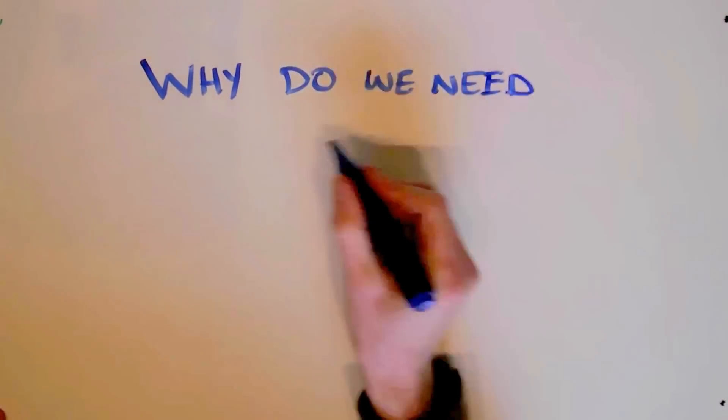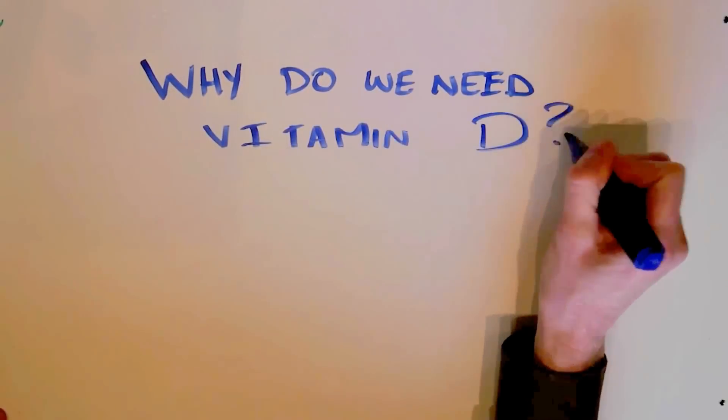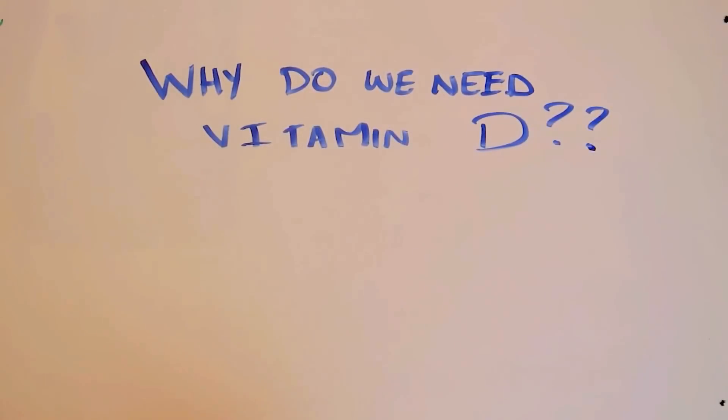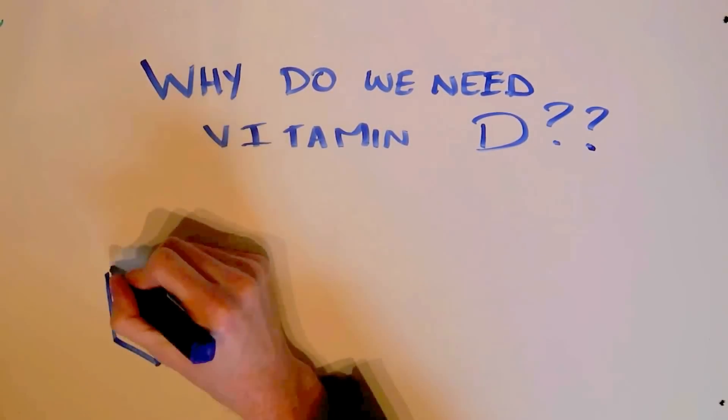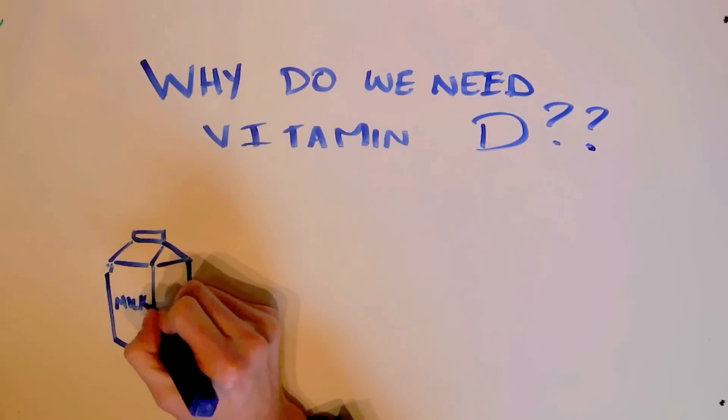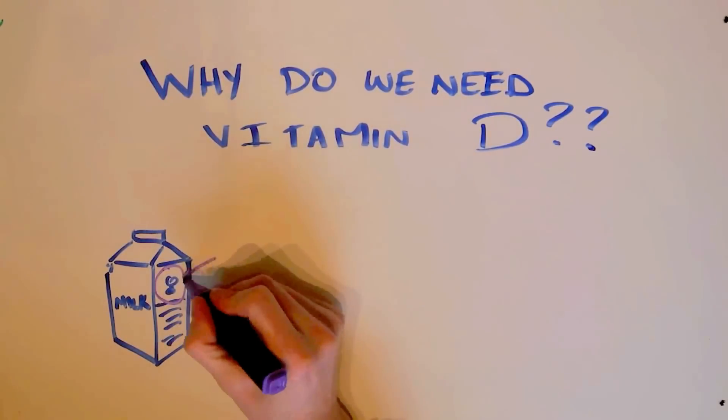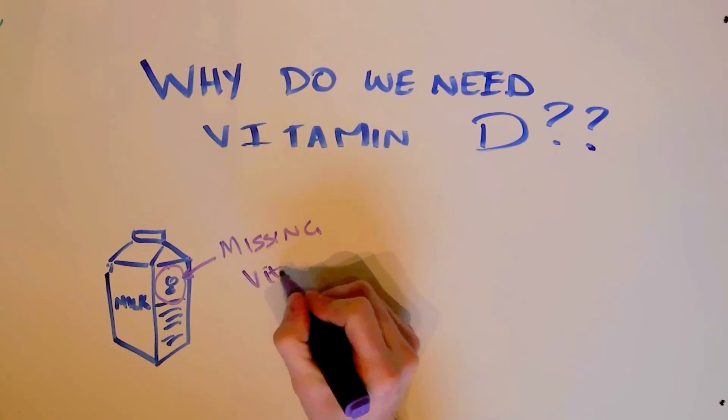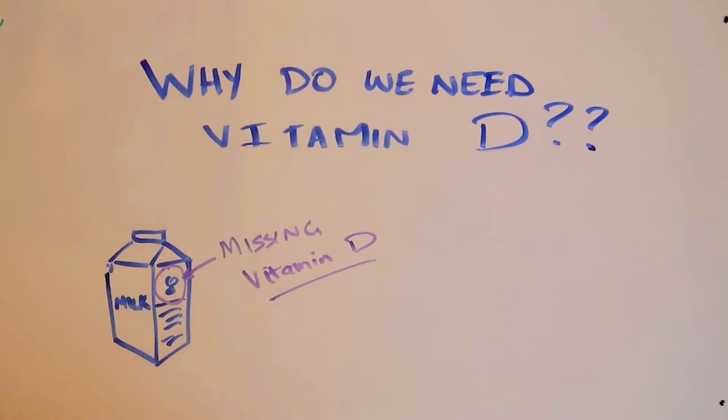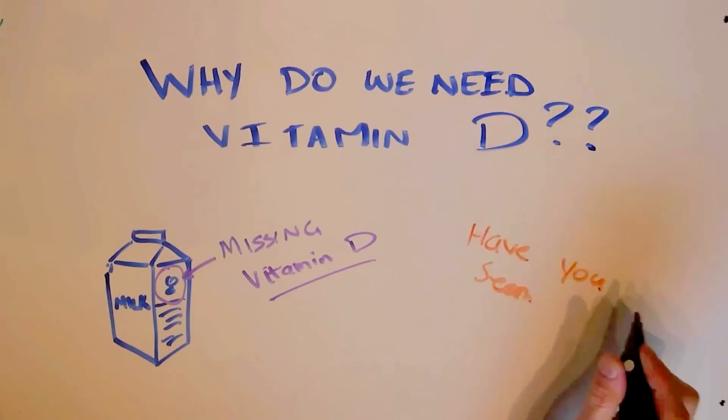Why do we actually need vitamin D? What's so special about it? Well, you probably already know that products like milk and grains are fortified with vitamin D. So some experts somewhere thought that we needed more vitamin D, and decided to put it in milk. Because we're missing vitamin D. It's like the lost child on the side of the milk box. We need vitamin D.